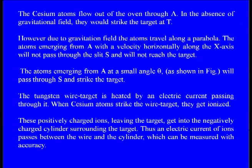The entire arrangement is enclosed in a highly evacuated chamber. When Stern did his first experiment, this time he maintained a higher degree of vacuum. That is the reason it is known as the improved experiment. The main idea is the vacuum of this chamber. The cesium atoms flow out of the oven through A, which is the narrow opening.